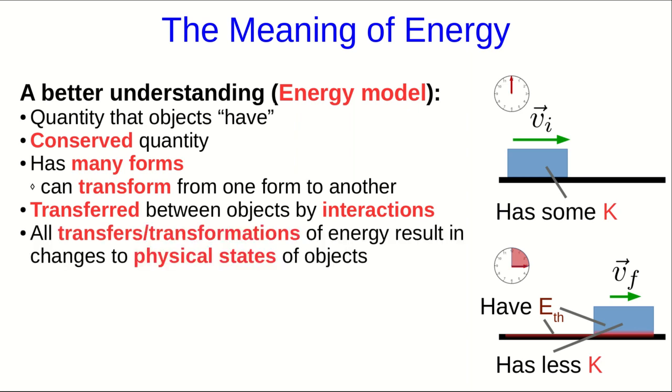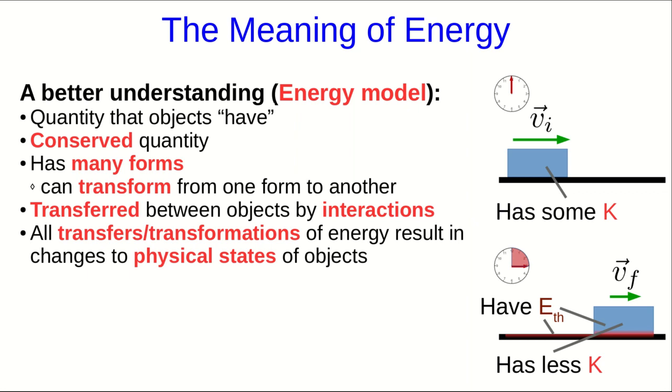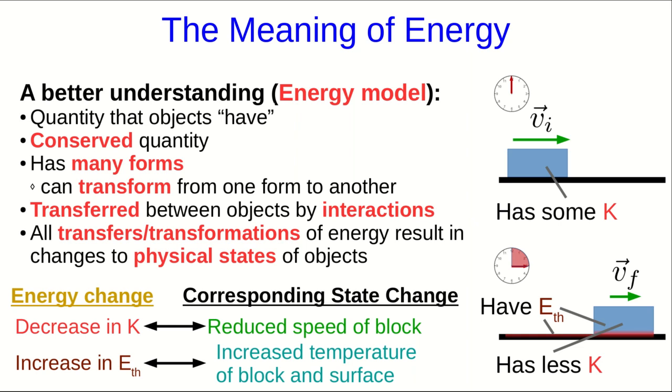This is because of friction, which is part of the interaction between the block and the floor. All transfers and transformations of energy result in changes to the physical states of objects. And so we can always couple an energy change with a corresponding physical change. Here, the decrease in kinetic energy is corresponding to a reduced speed of the block. And the increase in thermal energy corresponds to an increased temperature of the block and surface.